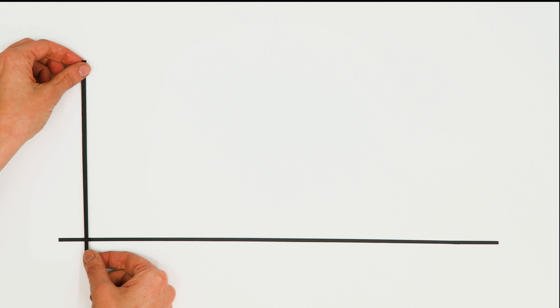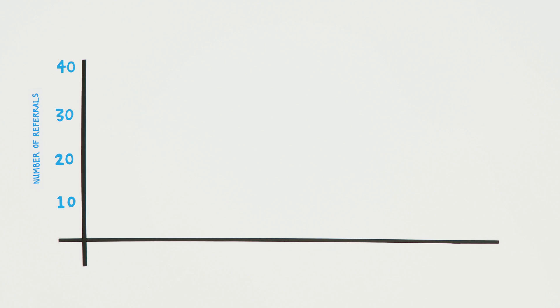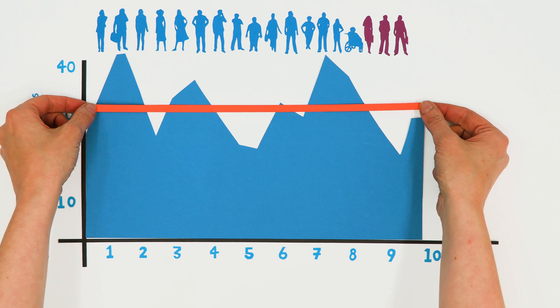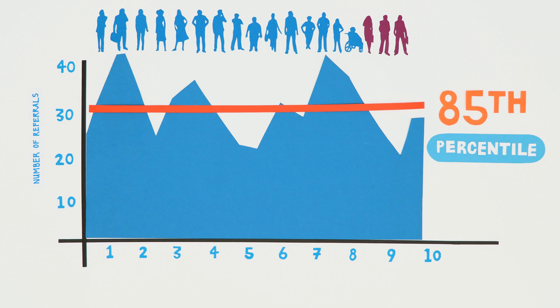So, if you have a small cancer service and your patients need to be seen urgently, within two weeks for example, then setting your capacity to the 85th percentile of demand will keep your waiting list shorter and help to ensure that they are all seen in time.